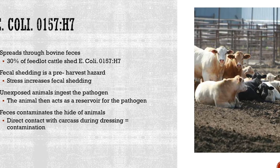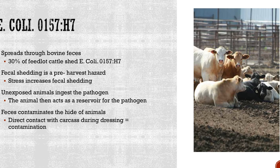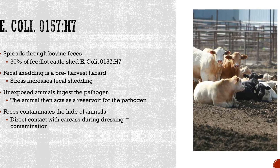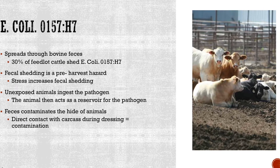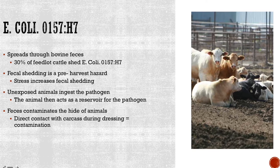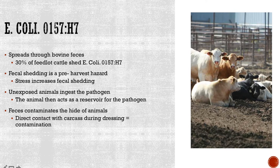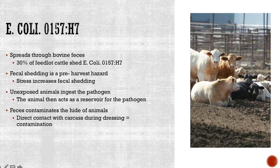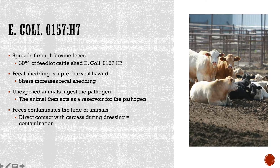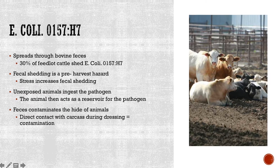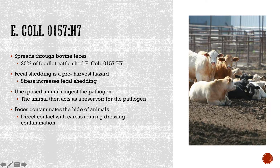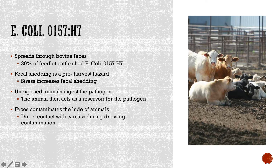Fecal shedding is a pre-harvest hazard. When animals are moved to the feedlot, stress induces greater amounts of fecal shedding of E. coli. Unexposed animals are then able to ingest the pathogen and act as a reservoir until slaughter. Feces from themselves or other animals cover the hides of animals prior to slaughter, and the direct contact of E. coli populations residing on the hide of the animal results in carcass contamination.